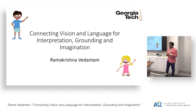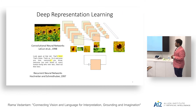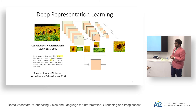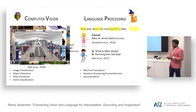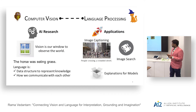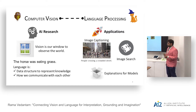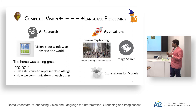I'm going to talk to you about connecting vision and language for interpretation, grounding, and imagination. In recent years, representation learning has led to a lot of progress in AI, where with convolutional neural networks we can learn hierarchies of features — rich descriptive features to do a lot of interesting things in vision. With recurrent neural networks, we can capture or model sequences with long-term dependencies. For image and sequential data, we have this ability to scale representations using neural networks.